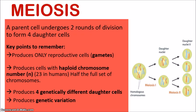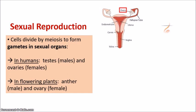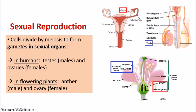Meiosis occurs to produce the gametes, so it is important in sexual reproduction. Cells divide by meiosis to form gametes in the sexual organs. In humans, meiosis occurs in the testes of males and the ovaries of females — sperm are manufactured in the testes and eggs in the ovaries. In flowering plants, meiosis occurs in the anther, the male part of the flower, and the ovary, the female part. The pollen consists of the male gametes, while the ovule within the ovary consists of the female gametes.